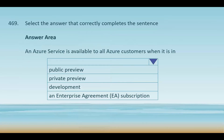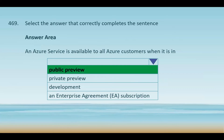Question number 469. The statement is: an Azure service is available to all customers when it is in — options are public preview, private preview, development, and enterprise agreement subscription. When an Azure service is in public preview, it is available to all Azure customers to use and test. Public previews allow customers to try new features before they become generally available, though they may have limited functionality or SLAs. In a private preview, the service is only available to a limited group by invitation. During development, the service is being built internally by Microsoft. EA subscriptions provide benefits like discounts but service availability is not limited to EA customers alone.